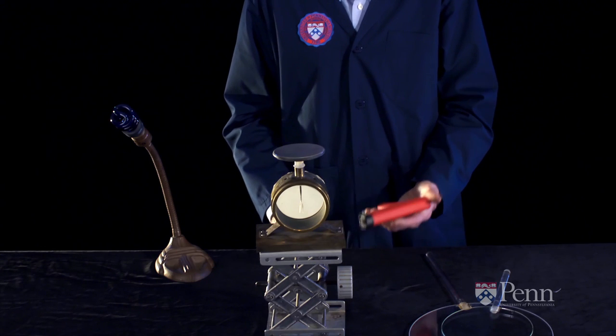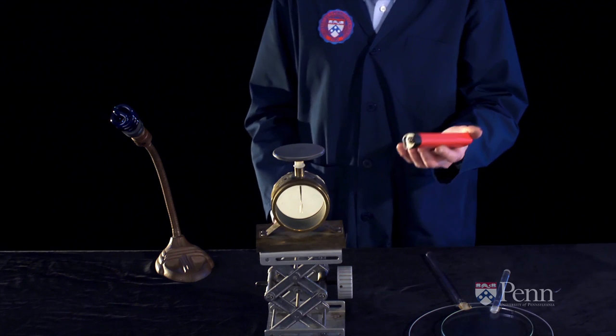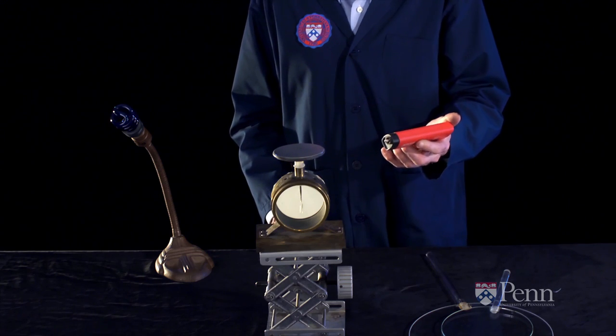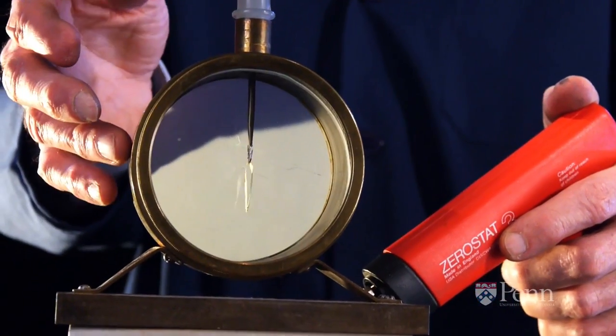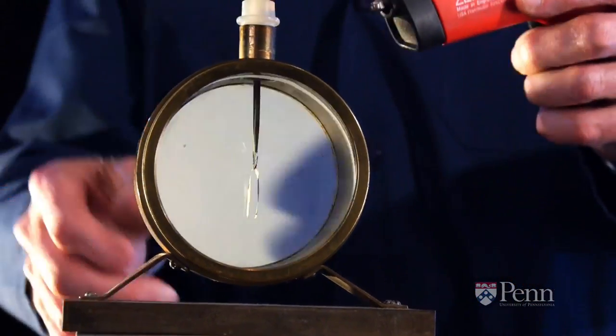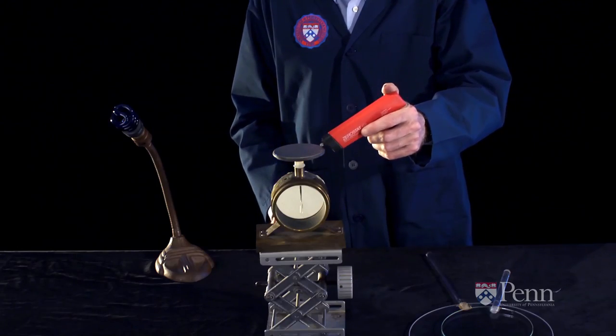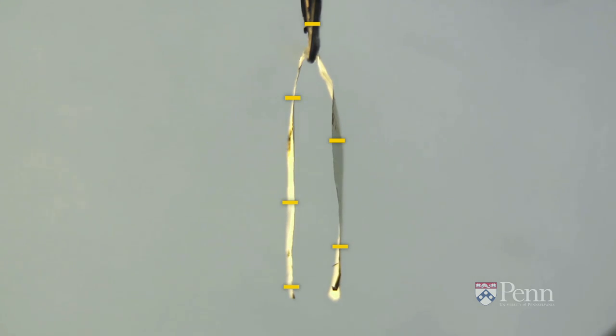We're going to charge the electroscope with a static gun. The static gun was originally invented to take the static away from vinyl records. Depending on how you use it, you can generate either a positive or a negative charge very easily. And the first thing we're going to do is charge the electroscope negatively.